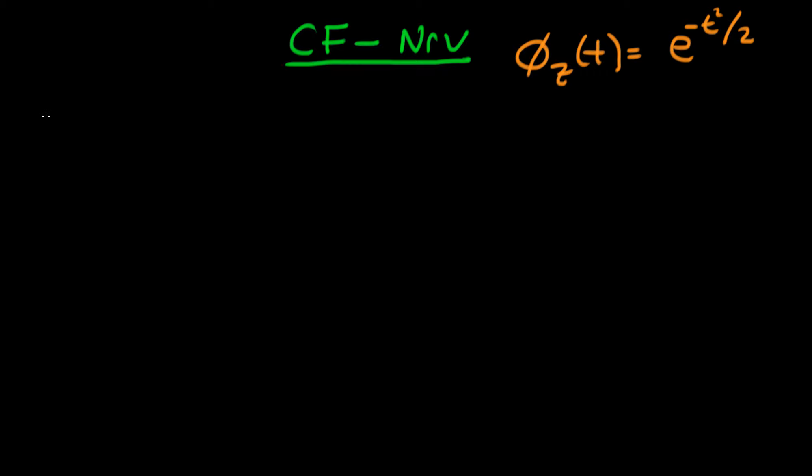To do this, we need to know the probability density function for a normal random variable. The PDF of a standard normal random variable is equal to 1 over root 2 pi times e to the minus x squared divided by 2.